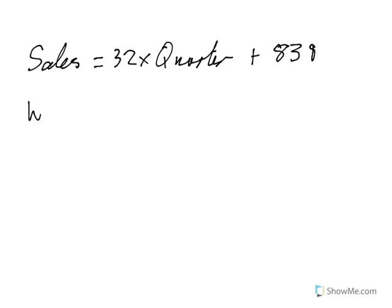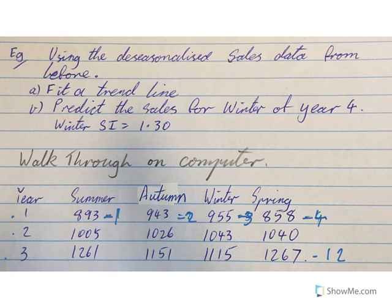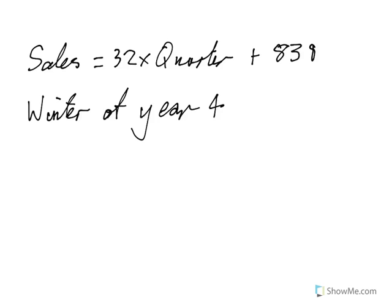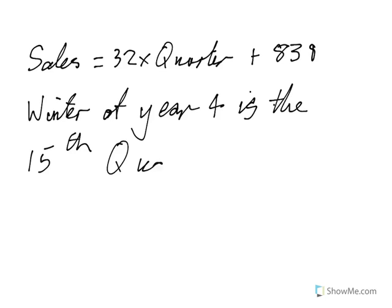So what is winter of year four? Going back — if time code 12 was spring of year three, then year four would continue: time code 13 is summer, 14 is autumn, 15 is winter. So the time code we're looking at is 15 — it's the 15th quarter.